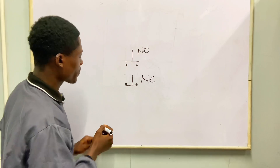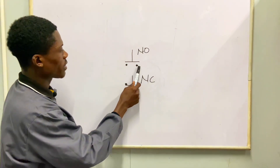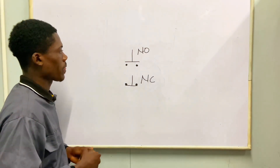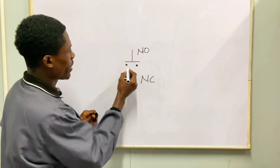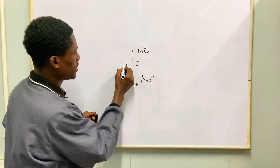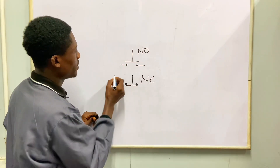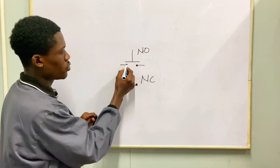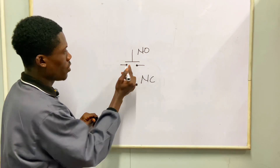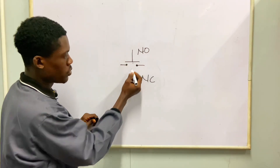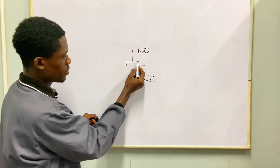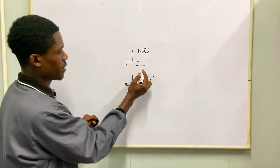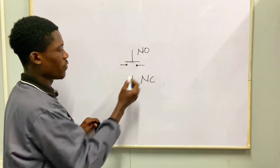This normally open contact does not allow current to flow because it is open. If you connect a live wire to one side, the current is going to be trapped at that side — it's not going to flow unless this bar is being pushed for it to come and link to the other contact, and then it's going to allow the flow of current.